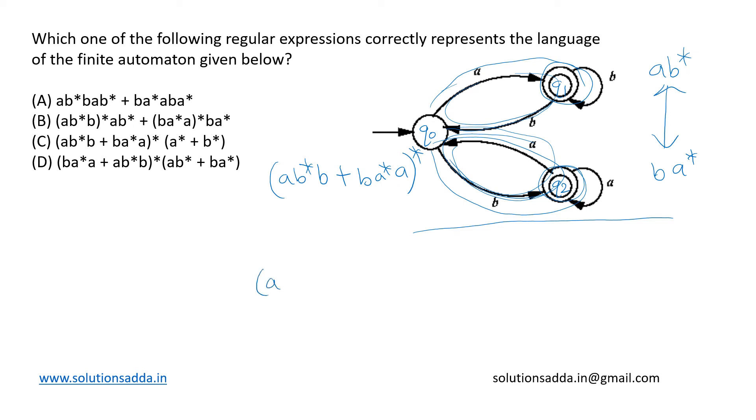Hence we get the final regular expression as (ab*b + ba*a)* upon the state q0, and then from q0 we can reach the final states using either ab* or ba*. Hence this is our final regular expression corresponding to the language accepted by this automaton. So option D is correct.